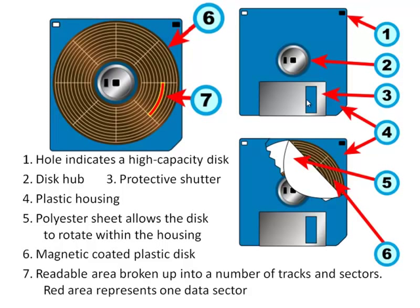Most floppy disks were very similar in their operation. They would have some kind of disk hub used so that a mechanical arm could slot in and spin it at high speeds. The three-and-a-half-inch disks introduced a protective shutter so you didn't need an extra sleeve to carry the disk, and also introduced a hard plastic housing. Inside is a polyester sheet that allows the disk to rotate rapidly without scratching. The disk itself is coated in magnetic particles, and the readable area is broken up into tracks and sectors.